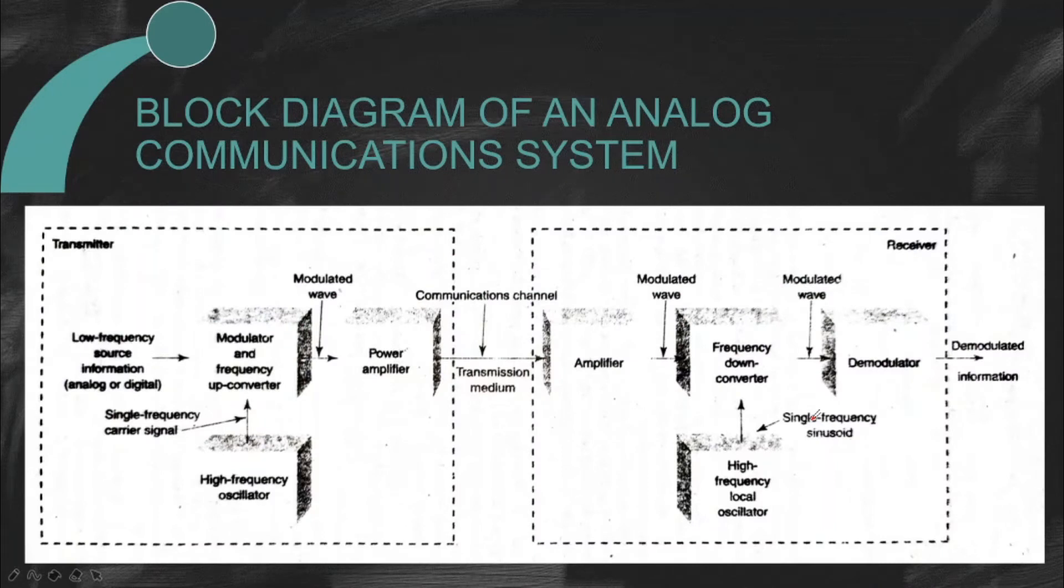Block diagram of an analog communication system. Itong picture na ito ay nagpapakita ng isang simple block diagram ng isang analog communication system. Nabanggit kanina na ang purpose ng isang electronic communication system ay mag-communicate ng information between two locations called stations, and na-accomplish yun by converting the original information into electromagnetic energy and then transmitting it to one or more received stations where it is converted back to its original form.